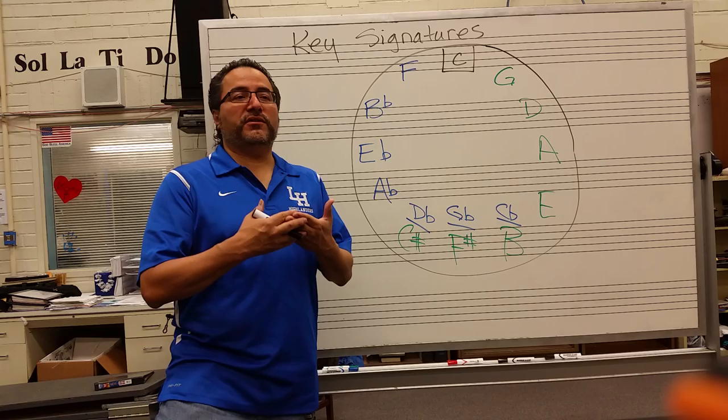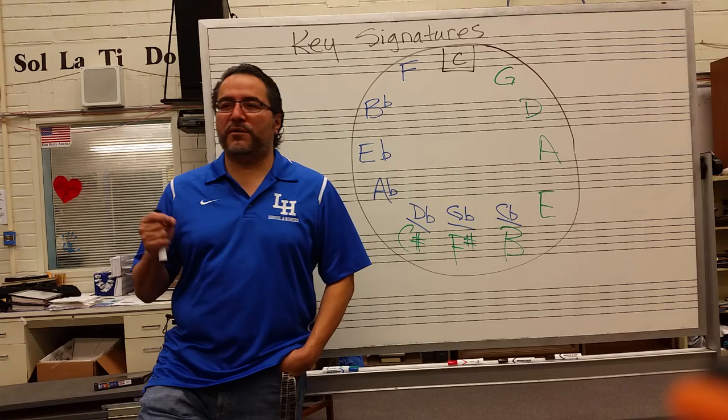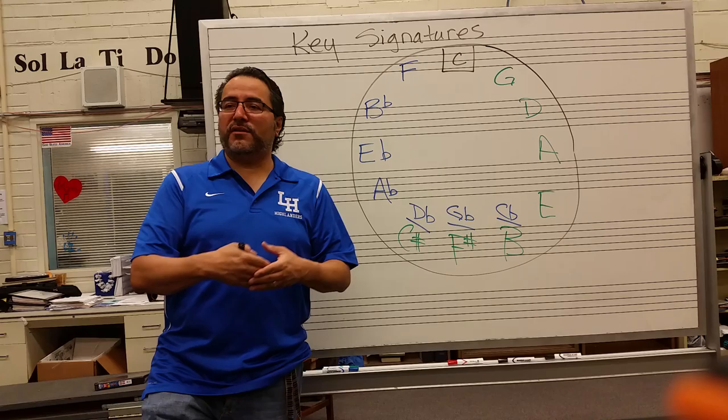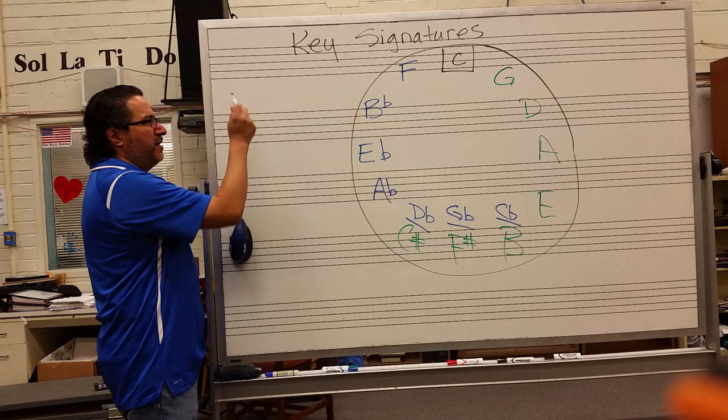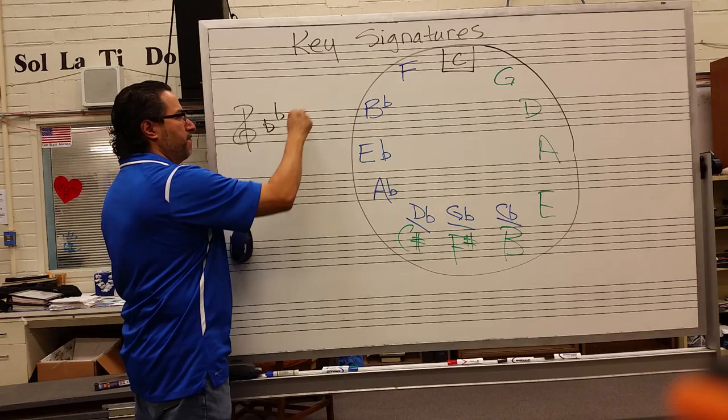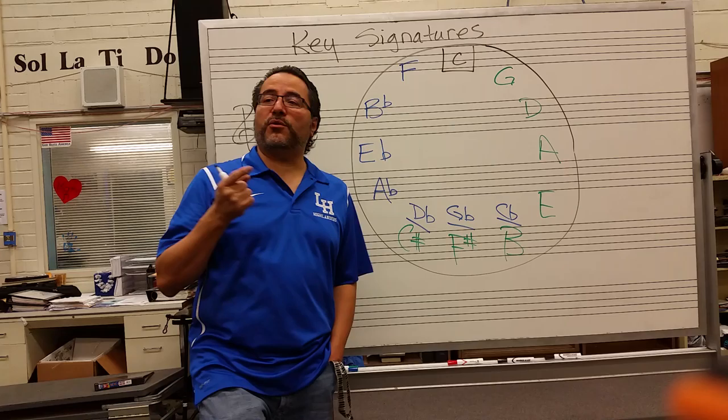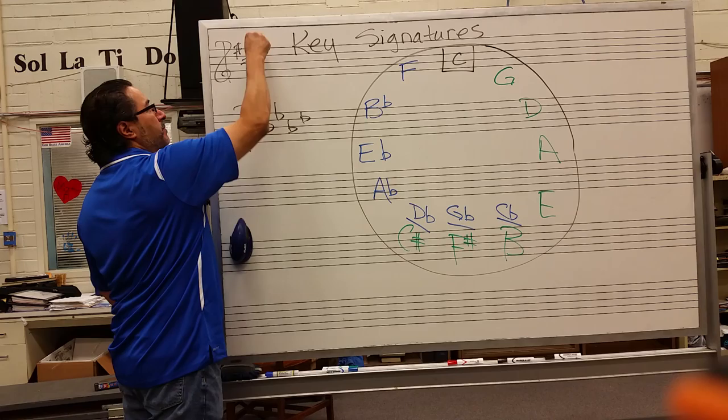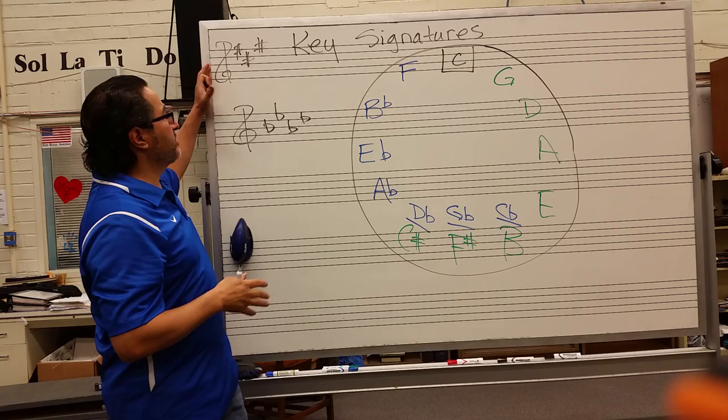Today's lesson builds on the circle of fifths to learn our key signatures. Just like time signatures organize the rhythmic element of your notes, key signatures are the pitch element to organizing your notes. At the beginning of each piece of music you're going to see key signatures — up to seven flats or up to seven sharps, always coming in the same order. They tell you what note is the most important note, and they also tell you which notes are sharp or flat.